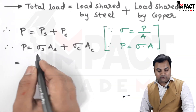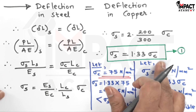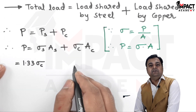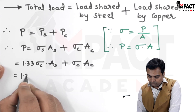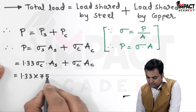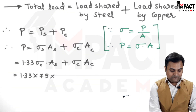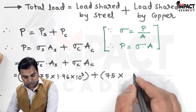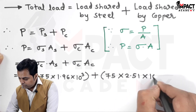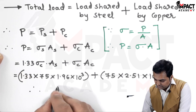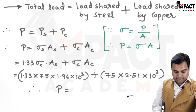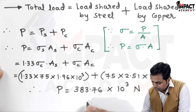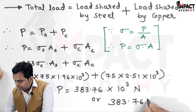Substituting σ_s = 1.33 σ_c with σ_c = 75 N/mm², A_s = 1.96 × 10³ mm², and A_c = 2.51 × 10³ mm², the total load comes out to be 383.76 × 10³ N, or 383.76 kN.